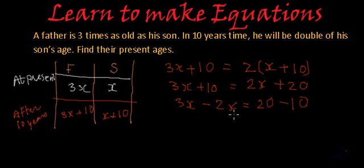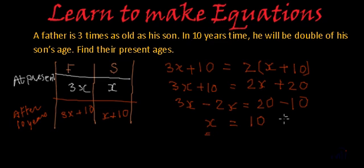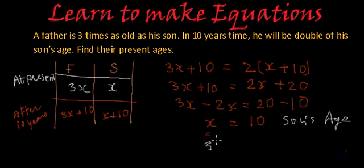So 3x minus 2x equals 20 minus 10. That gives us x equals 10. And x is the son's current age, so the son is 10 years old. Father's current age is 3 times x, which is 3 multiplied by 10, which equals 30. So that is the father's age.